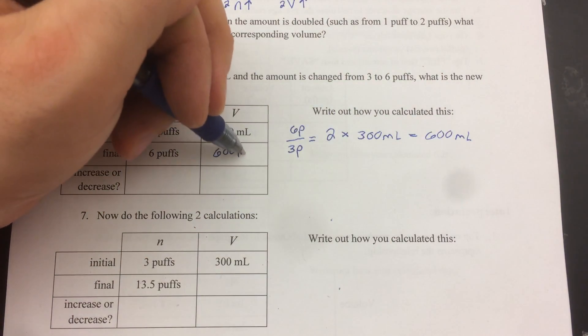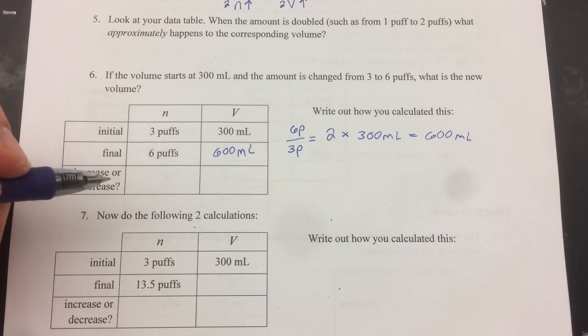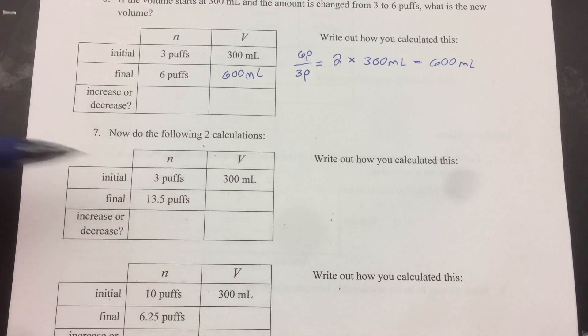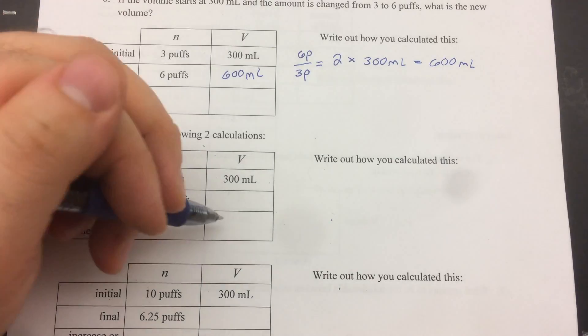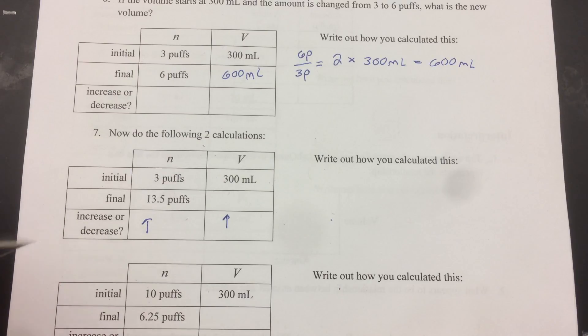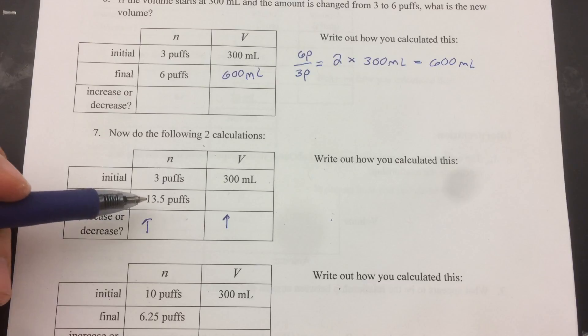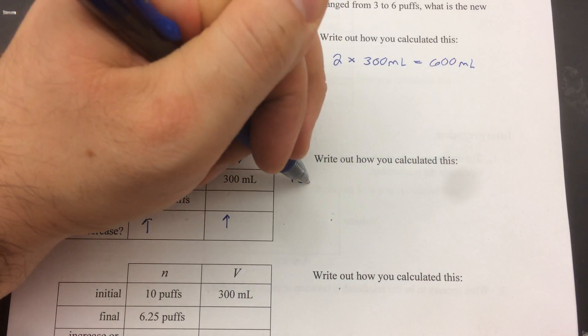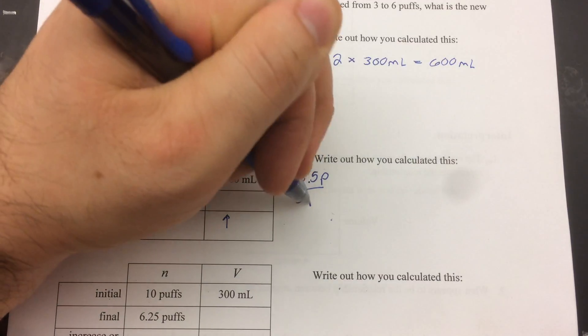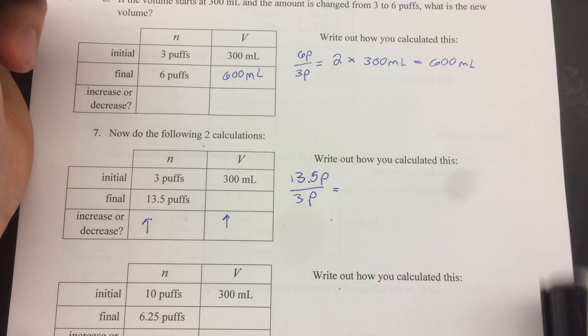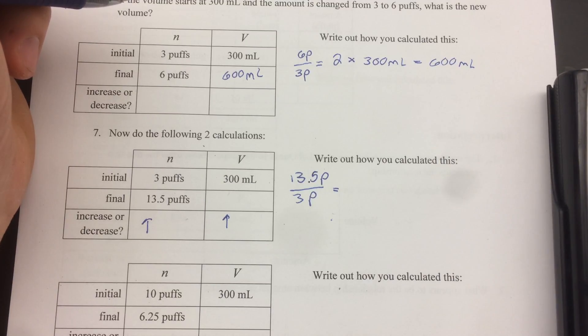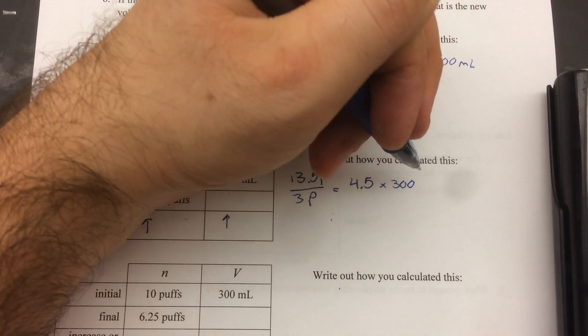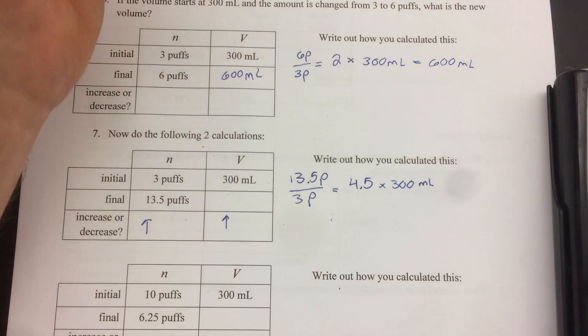Now this was pretty easy because it ended up being a factor of 2. Factors don't always end up being a nice even number. Sometimes they're decimals. And that's what's happening in the next one. So in the next one, it goes from 3 to 13.5. So this is increasing. So we're still going to expect the volume to increase. However, the factor is not 2. So the way we found the factor previously was we took the final amount and divided it by the initial amount. So we're going to do the same thing here. Except now we're going to need our calculator. So 13.5 puffs over 3 puffs equals 4.5. So 4.5 times 300, 1350.